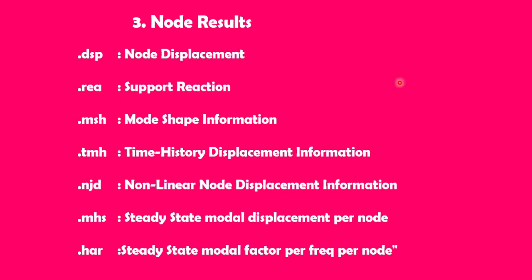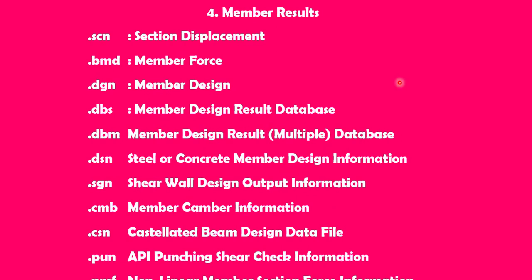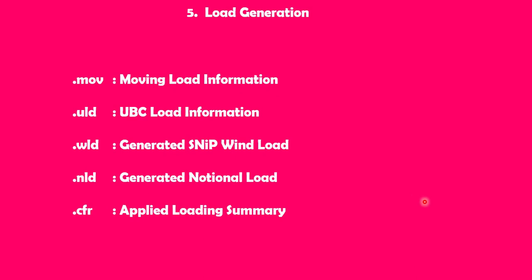The member result files will be based on the following extensions: .SCN, .BMD, .DGN, .DBS, and several other categories. .SCN represents section displacement, .BMD contains member forces, and .DGN or .DBS contains the member design results database. If you have a shear wall, in the member category results .SGN represents your shear wall design output information — that .SGN file contains shear wall design output information.